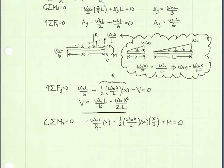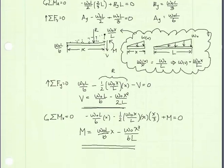Summing moments about the cut equal to zero allows us to solve for the internal moment in terms of x. The first term is the reaction at A times its moment arm x; the next term is the resultant force from the distributed load times its moment arm, which is one-third of x, so x over 3; plus M equals zero. Solving gives: M equals W naught L over 6 times x minus W naught x cubed divided by 6L. You'll notice the shear function is the derivative of the moment function.